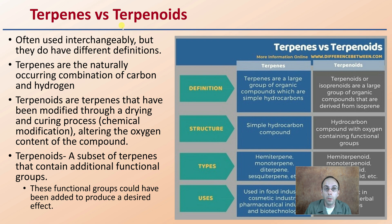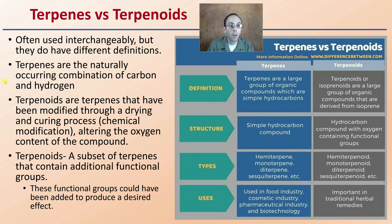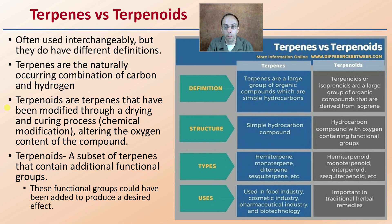So first off, terpenes versus terpenoids — what's the general comparison? These are often used as interchangeable terms, but they do have different definitions. Terpenes are the naturally occurring combination of carbon and hydrogen. Terpenoids are terpenes that have been modified through a drying and curing process — basically a chemical modification — and that alters the oxygen content of the compounds on the molecular level.